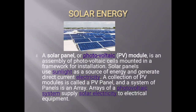Solar energy: A solar panel, or photovoltaic (PV) module, is an assembly of photovoltaic cells mounted in a framework for installation. Solar panels use sunlight as a source of energy and generate direct current electricity. A collection of PV modules is called a PV panel, and a system of panels is called an array of a photovoltaic system, which supplies solar electricity to electrical equipment.